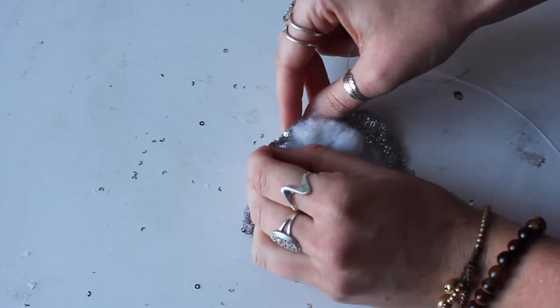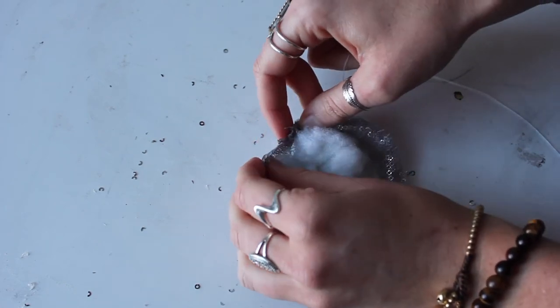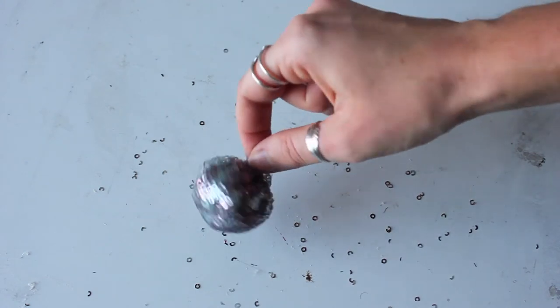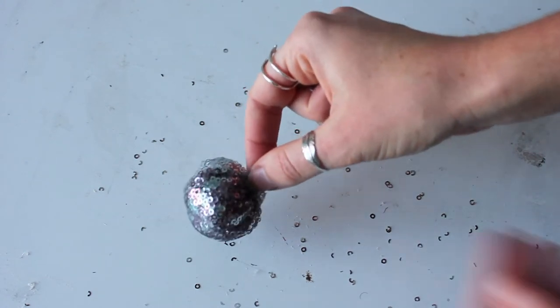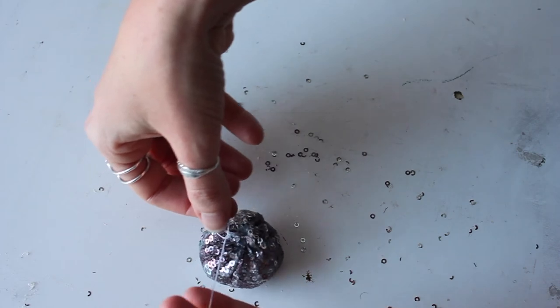You weave the needle and thread in and out around the circumference of the circle. Once you then pull it tight, it looks something like this. And then you're going to just knot it off.